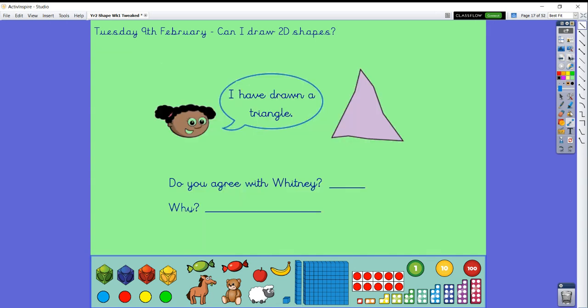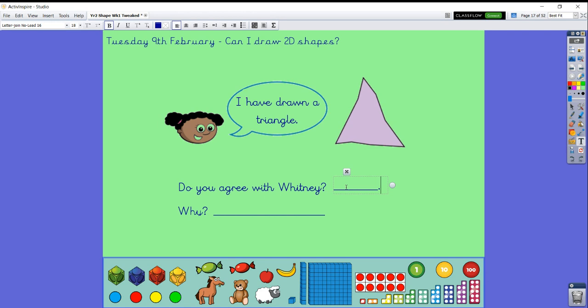This is a little bit of a thinking question now. This young lady has drawn, she says she has drawn a triangle. Have a think. What do you think? I do agree with Whitney. I am going to say no. And why am I saying no? I am saying no because look, it's not got, for me, I would like to see three really straight sides using a ruler. Whereas these ones are a little bit bendy. It makes it look like it's got more sides.